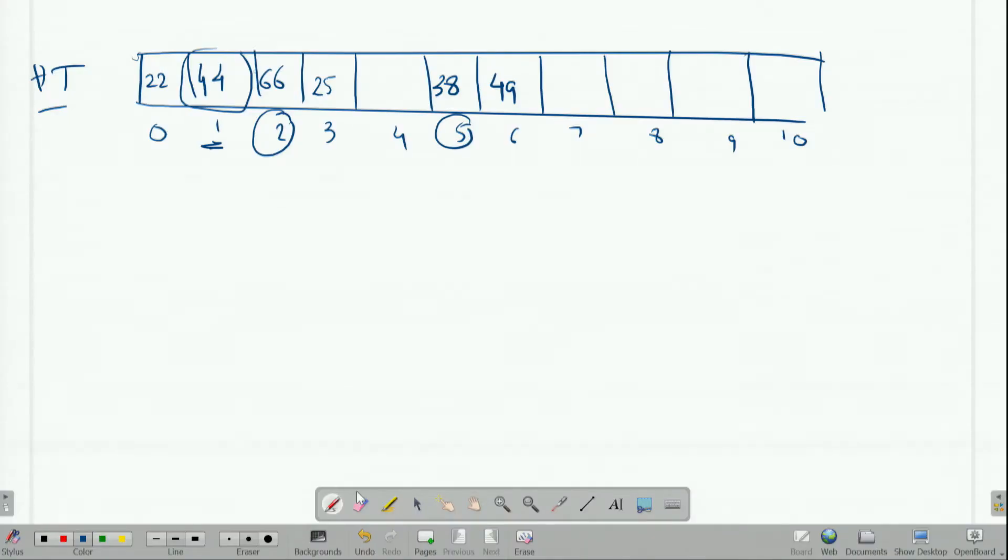We apply h2 and get some new key, then go to that location and place our element there. Let me take an example. Suppose my h1(x), the first hash function, is x mod 11, and the second hash function h2(x) is x mod 5.